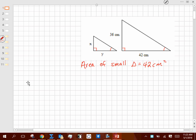Okay, so in this problem, the area of the small triangle is 42 centimeters squared. We are trying to find x and y. Now, x and y are distances, and distances are one-dimensional.